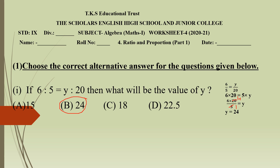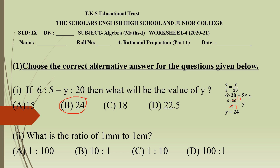Now let's move to the next question. What is the ratio of 1 mm to 1 cm? Option A is 1 to 100, option B is 10 to 1, option C is 1 to 10, and option D is 100 to 1. You know that 1 cm is equal to 10 mm, so we convert cm to mm. The ratio will become 1 is to 10, so the answer is option C.